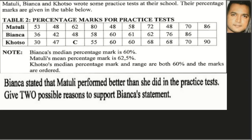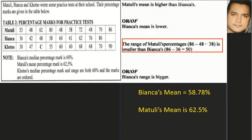Bianca stated that Matuli performed better than she did in the practice tests. Give two possible reasons to support Bianca's statement. The easiest way to determine who is the better performer is to look at the mean or average marks. We worked out Bianca's average earlier — it was 58.78% — and Matuli's mean mark was given in the information.